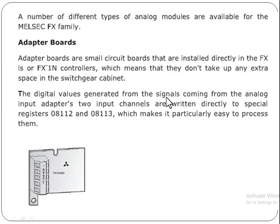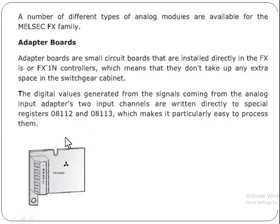The digital values generated from the signals coming from the analog input adopters — two input channels — are written directly to special registers. The values coming from the input adopters are written directly into the two special registers D8112 and D8113, which makes it particularly easy to process them. This analog input adopter is inserted into the PLC base unit and values are stored into these two special registers, then converted to digital values and provided to the PLC for processing.